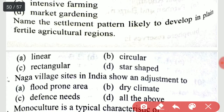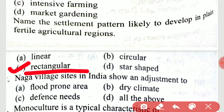Name the settlement pattern likely to develop in plain fertile agricultural regions. The answer is option C, rectangular.